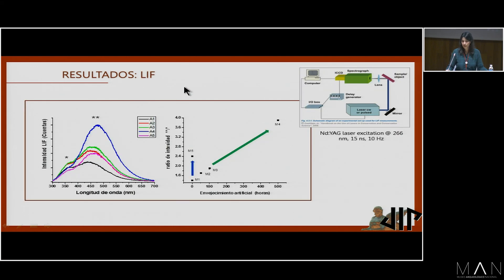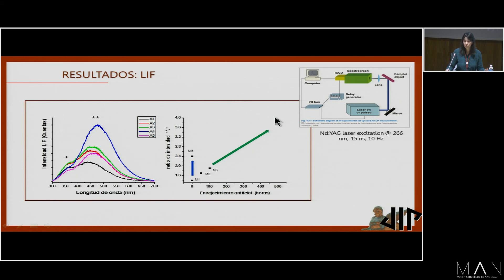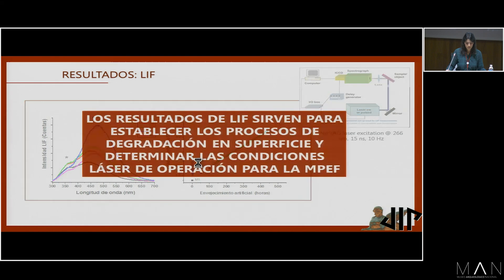También analizamos las muestras mediante LIF. Esta es una técnica espectroscópica que nos permite determinar la composición molecular de las muestras, y además nos permitió validar los sistemas láser para la microscopía óptica no lineal. A partir del análisis de la fluorescencia de superficie, pudimos ver los procesos de degradación: observamos cómo a medida que las muestras presentaban mayor envejecimiento artificial, se iba incrementando la fluorescencia. Asimismo, aquellas muestras con envejecimiento natural presentaban más fluorescencia a medida que eran más delgadas. Por lo tanto, los resultados de LIF sirven para establecer los procesos de degradación en superficie y determinar las condiciones láser de operación para la fluorescencia por excitación multifotónica.